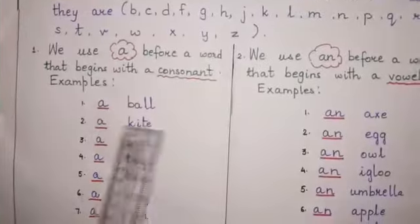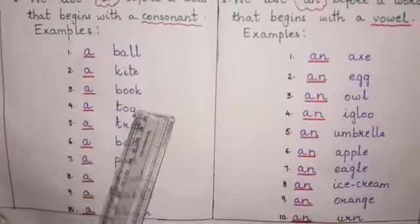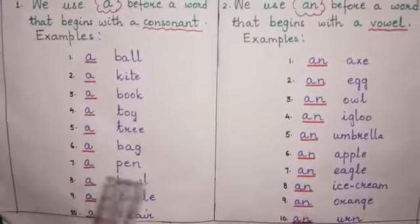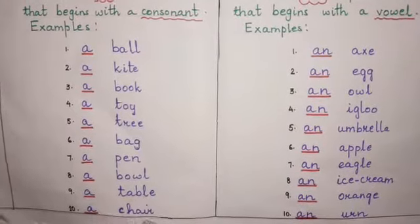Similarly, a kite, a book, a toy, a tree, a bag, a pen, a bowl, a table, a chair.